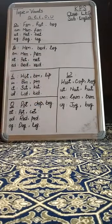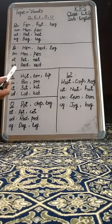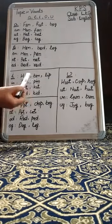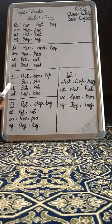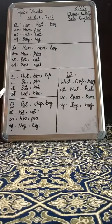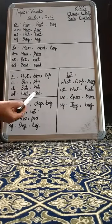Now here are some combination sounds with the vowel I. First one is -in. Its examples are Bin and Pin. Second: -it. Its examples are Sit and Kit. Last one: -id. Its examples are Lit and Kid.